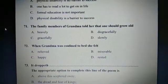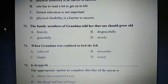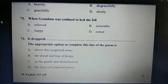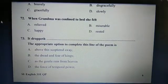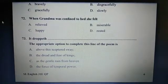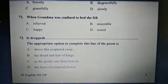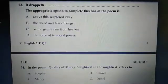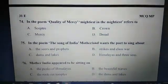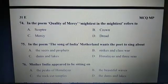Question 72: When grandma was confined to bed, she felt B: Miserable. Question 73: It dropped dash — the appropriate option to complete this line of the poem is C: As the gentle rain from heaven. Question 74: In the poem 'Quality of Mercy', 'Mightiest in the Mightiest' refers to C: Mercy.